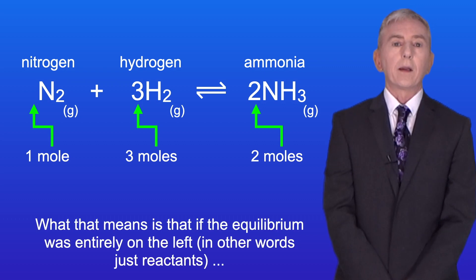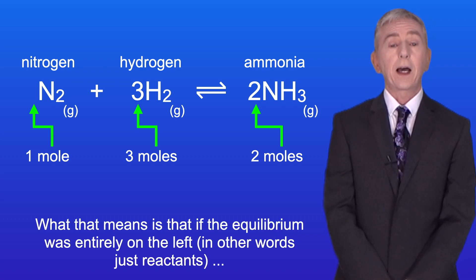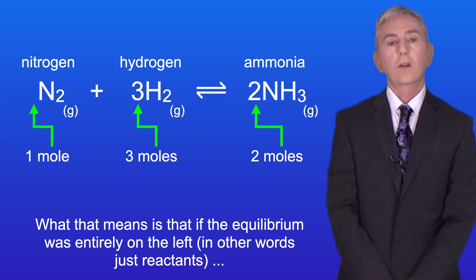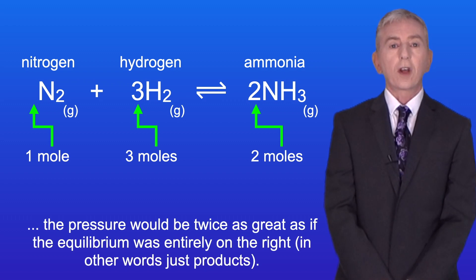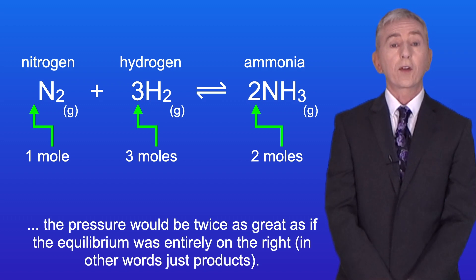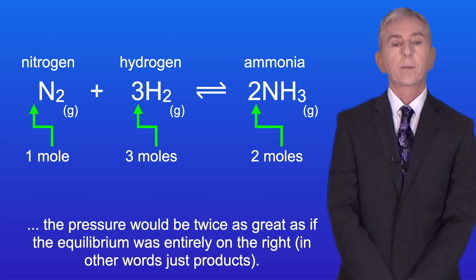So what that means is that if the equilibrium was entirely on the left — in other words just reactants — the pressure would be twice as great as if the equilibrium was entirely on the right, in other words just products.